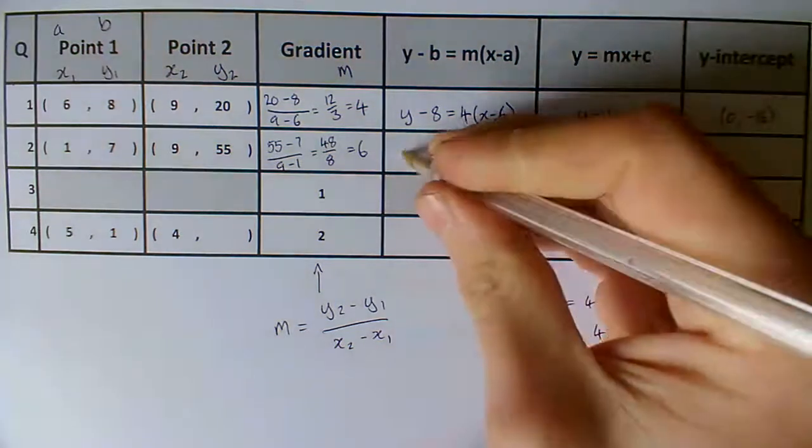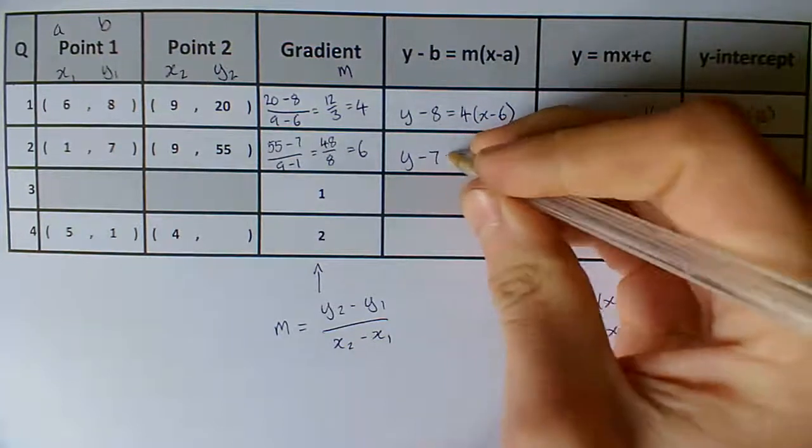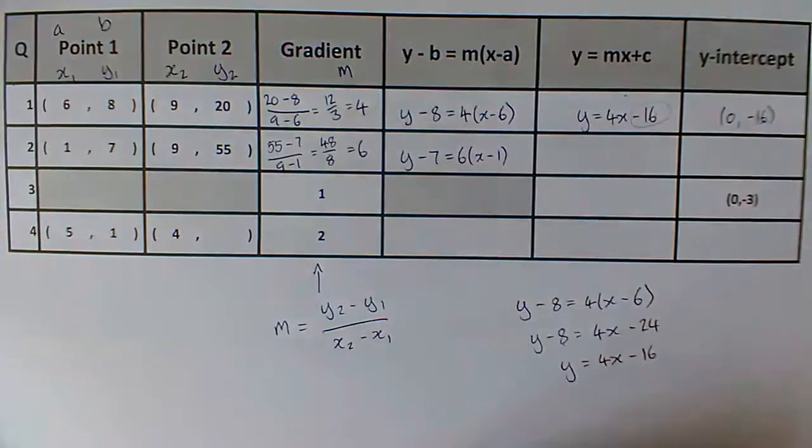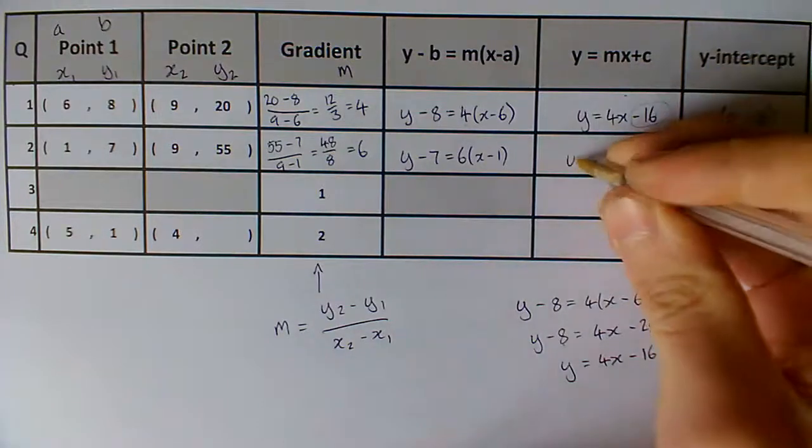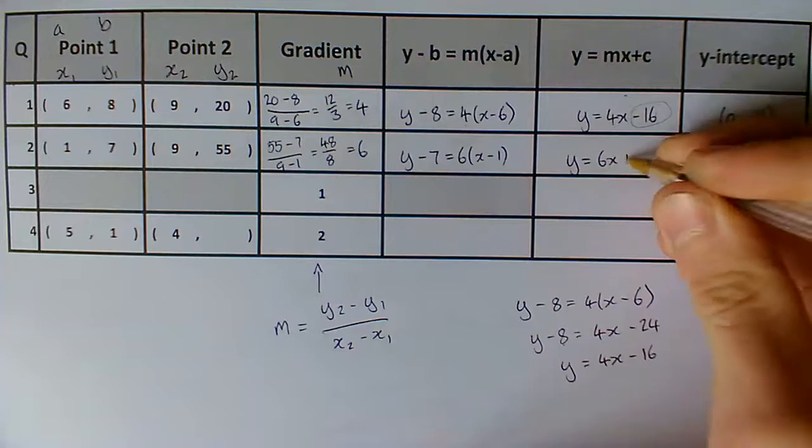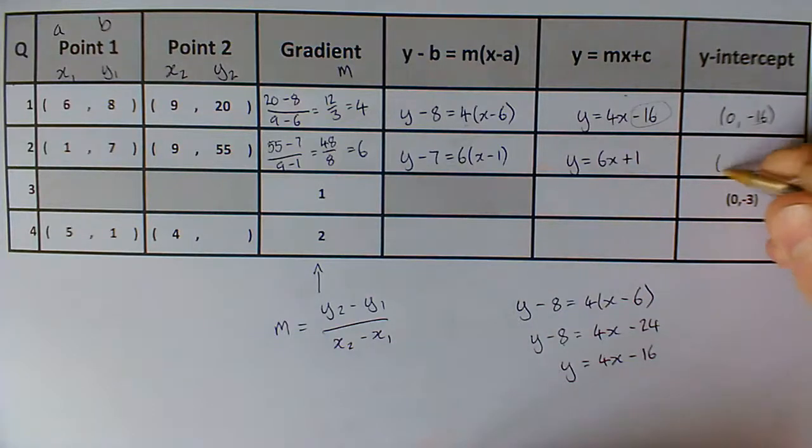So, hopefully you've had a go with this row. You should have got y minus 7 equals 6 lots of x minus 1. A little bit of rearranging should have given you y equals 6x plus 1, and your y-intercept should have been 0, 1. So, that's your answers that you should have got.